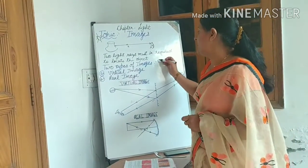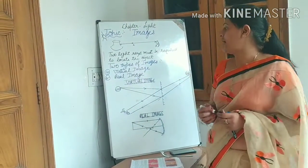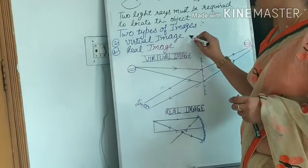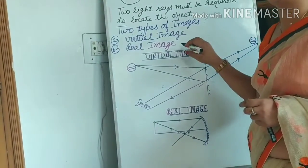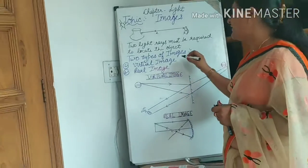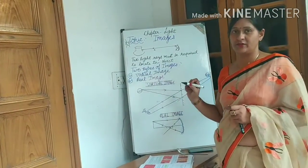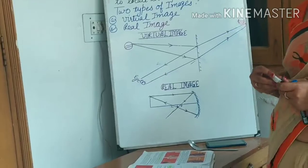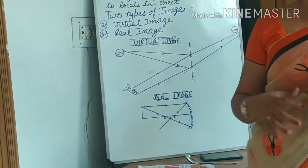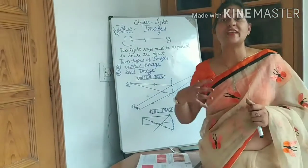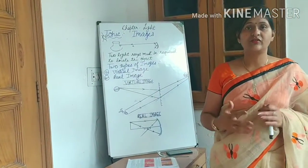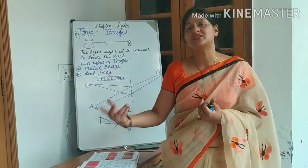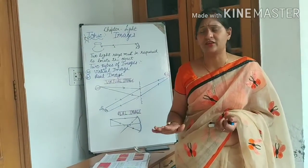Now let's look at the two types of images. There are two types: virtual image and real image. Let us understand what a virtual image is. Virtual means something which seems to be there but actually is not there.